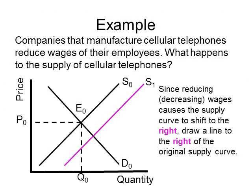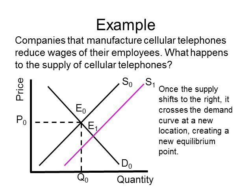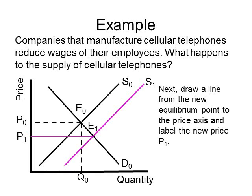Now that we know the direction, we draw a new supply curve to the right of the original. Once the supply curve shifts to the right, it crosses the demand curve at a new location, creating a new equilibrium point E1. We then draw a line from E1 to the price axis and label the new price P1, and a line from E1 down to the quantity axis and label the new quantity Q1.